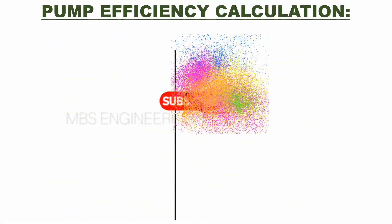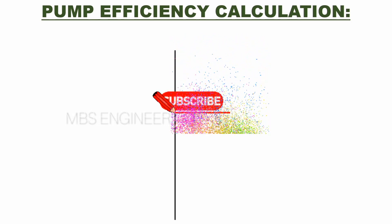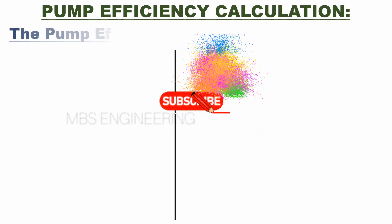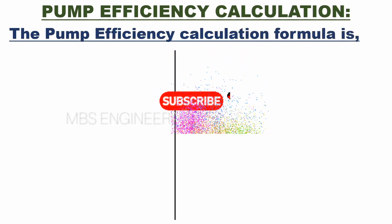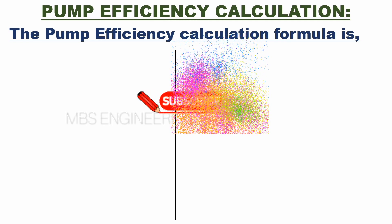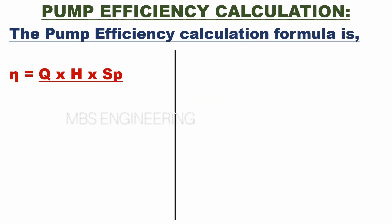We learn the formula for pump efficiency calculation for the centrifugal pump. Eta is equal to Q into H into specific gravity, and the obtained value is divided by 367 into brake kilowatt.